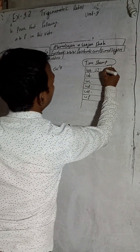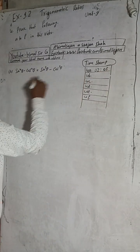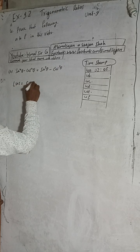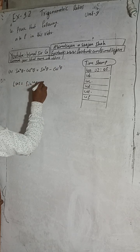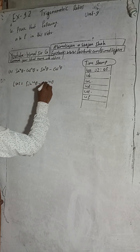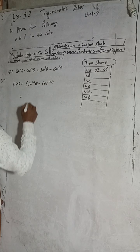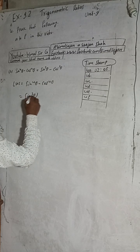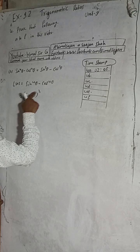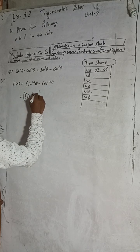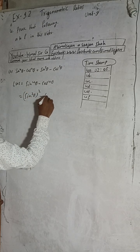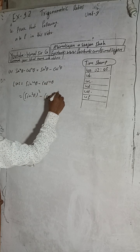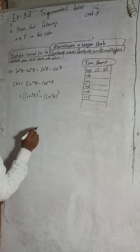Now this is our question. Here we have sin⁴θ − cos⁴θ. We can write this as sin²θ whole square minus cos²θ whole square — since two twos are four, sin⁴θ, and similarly cos⁴θ.